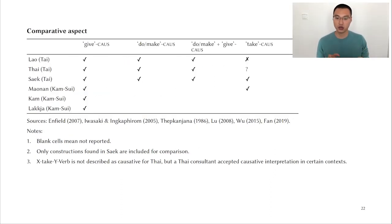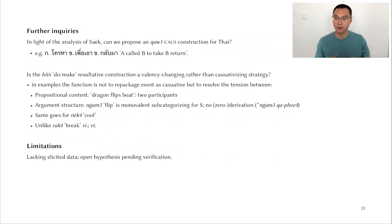So this brings us to the comparative aspect of this study. I have laid out the constructions found in Saek and checked whether they have been described by some well-studied Thai languages and some recently described Kam-Sui languages, which are of the same family. The thing about Thai is interesting because X take Y verb is not described as a causative for Thai, but the Thai consultant accepted causative interpretation in certain contexts, which further brings us into further inquiries. In light of the analysis for Saek, can we propose an ʔau causative construction for Thai? This is the example that my consultant provided, A called B to take B return, which means A does not return together. And this is pretty much the same example as I provided for the Saek ʔau causative construction.